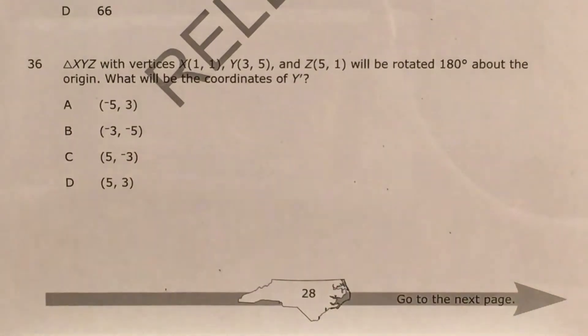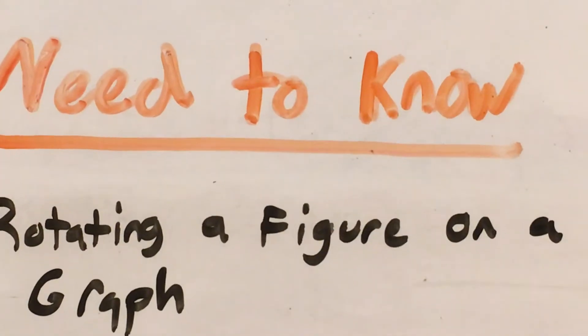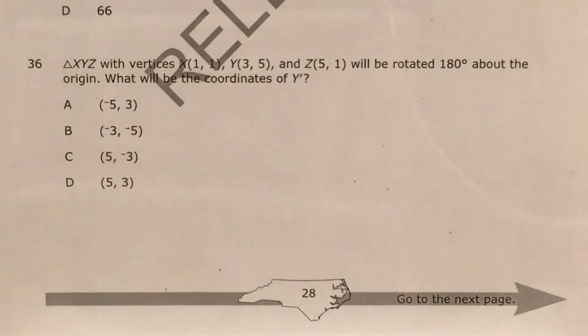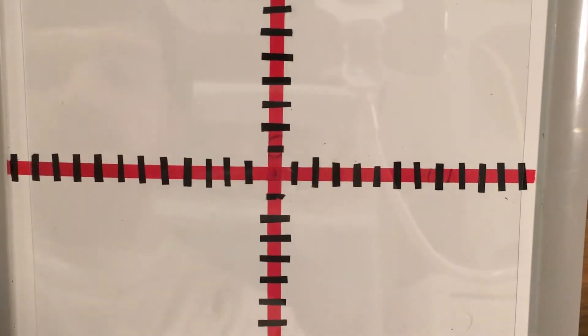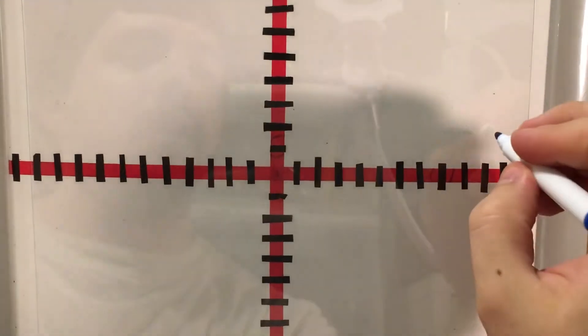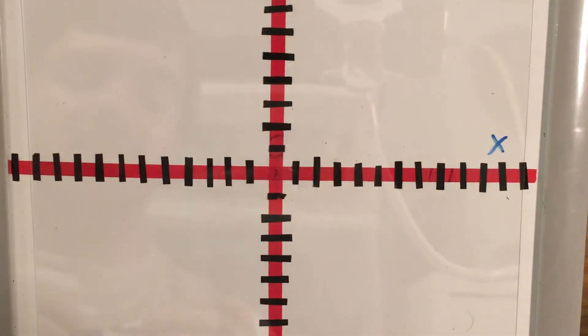Now in order to do a question like this, you'll need to know about rotating a figure on a graph. So let me actually go ahead and bring out my graphing board and zoom out a bit. Okay, here's my X axis and my Y axis, and it's for this reason, X axis and Y axis, that I actually don't like that the problem called the points X, Y, and Z. I think that can end up confusing people, but I'll go ahead and draw the actual points anyway.